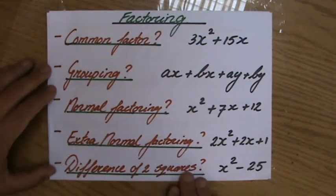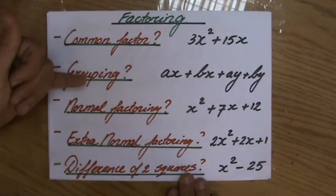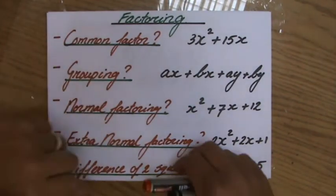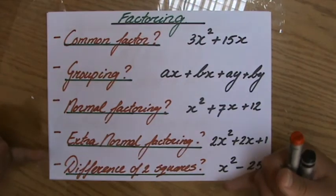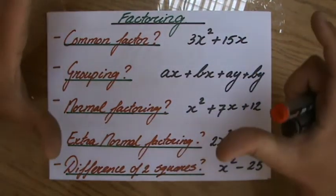Is it what I call normal factoring or factorizing? Or is it what I call extra normal factorizing? Or is it the difference of two squares? These are the five questions which will all make sense to you very shortly.